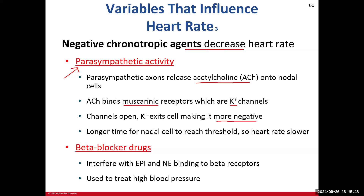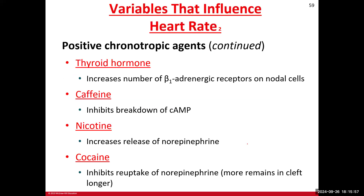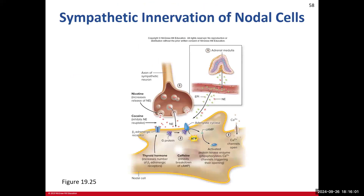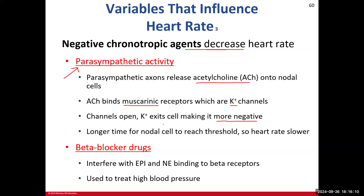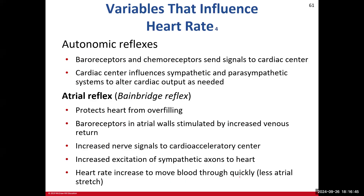That brings us to beta blocker drugs. Looking at the name 'beta blocker,' these drugs affect the beta-1 adrenergic receptors and block the binding site for norepinephrine and epinephrine. Those neurotransmitters will not be able to stimulate the secondary messenger system, and therefore the heart rate slows down. If we slow the heart rate, we can drop the blood pressure, because blood pressure equals heart rate times total peripheral resistance. So we drop the heart rate, we can drop the blood pressure — that's the key function of beta blocking drugs.